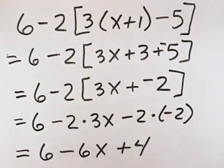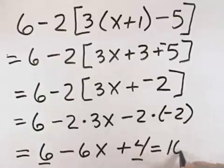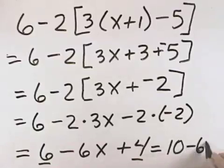Combining like terms, we can see that we have 2 constants, a 6 and a 4. 6 plus 4 is 10, and we still have our minus 6x, so the result is 10 minus 6x.